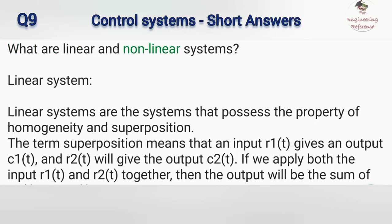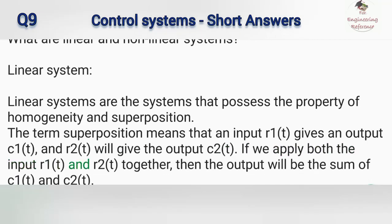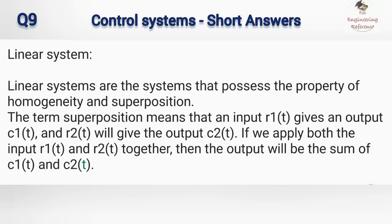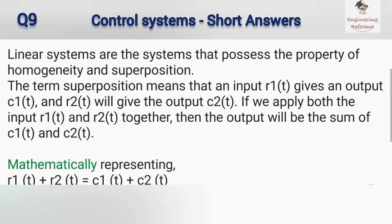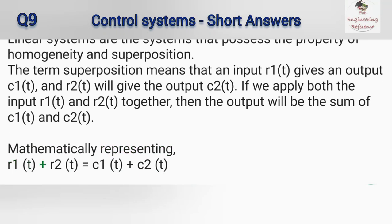What are linear and nonlinear systems? Linear systems are the systems that possess the property of homogeneity and superposition. The term superposition means that an input R1(t) gives an output C1(t), and R2(t) will give the output C2(t). If we apply both inputs R1(t) and R2(t) together, then the output will be the sum of C1(t) and C2(t). Mathematically: R1(t) + R2(t) = C1(t) + C2(t).